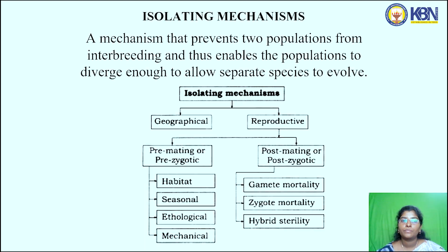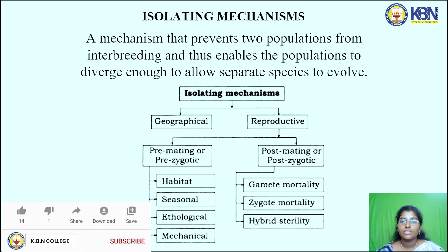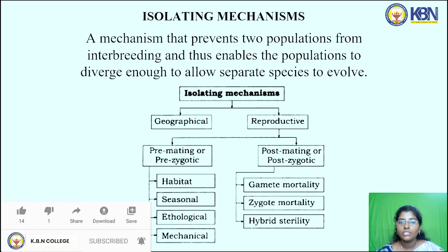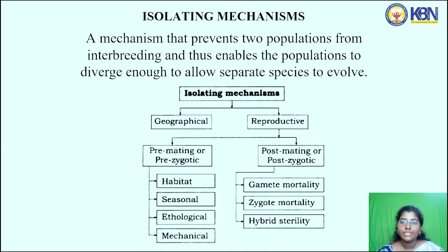Forces of evolution — isolating mechanism: a mechanism that prevents two populations from interbreeding and thus enables the populations to diverge enough to allow separate species to evolve. There are two types: geographical and reproductive. Reproductive isolation is further divided into premating (prezygotic) and post-mating (postzygotic). Premating includes habitat, seasonal mechanisms, ethological isolating mechanisms, and mechanical isolating mechanisms.